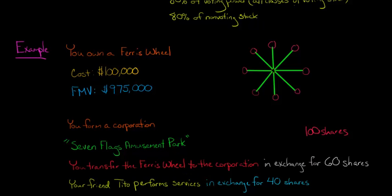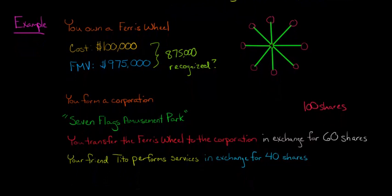So now here's the question. Remember we have that 80% of vote and value to qualify for a Section 351 transaction, because your property has gone up $875,000 in value. So the question is, do we recognize that? Do you have a recognized gain here of $875,000 on the transfer of the Ferris wheel? Do you meet this 80% of vote and value? You've definitely transferred property in exchange for stock, so you've met the first two requirements, but do you meet the 80% because Tito is performing services? And the answer is no.